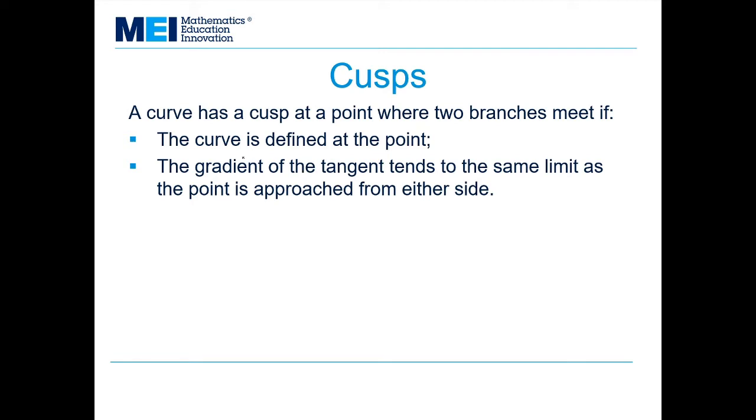And if the gradient of the tangent tends to the same limit as the point is approached from either side. So we might have something on our curve that looks a little bit like this. You can see that as the gradient changes there's a discontinuity in the gradient at this point. It doesn't change smoothly.